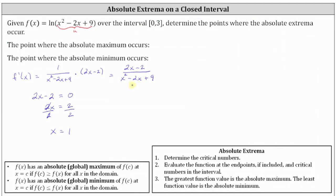To find the points where we have absolute extrema, we need to evaluate the original function at the endpoints — since the interval is closed — as well as at the critical number. This means we need to determine f of zero, f of one, and f of three. We use x equals zero and x equals three because those are the closed endpoints of the interval, and x equals one because it is the critical number.